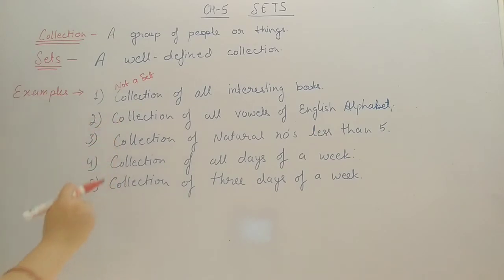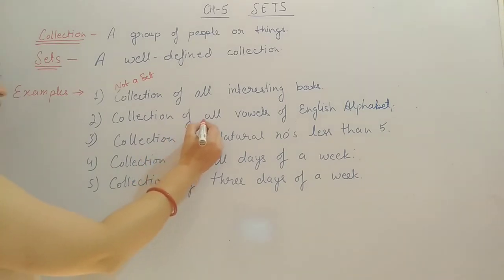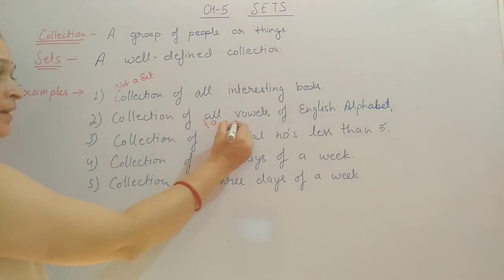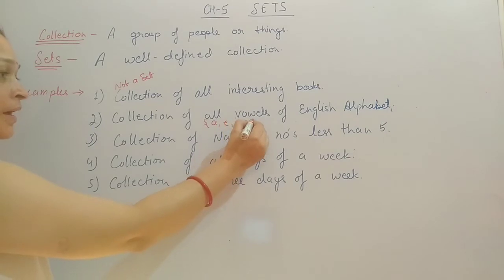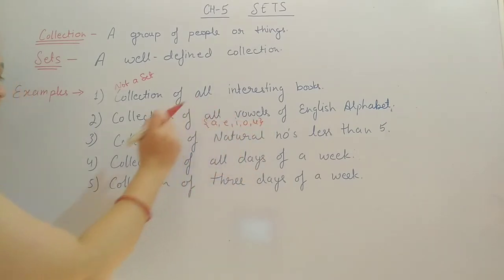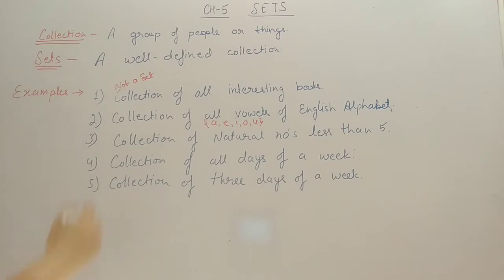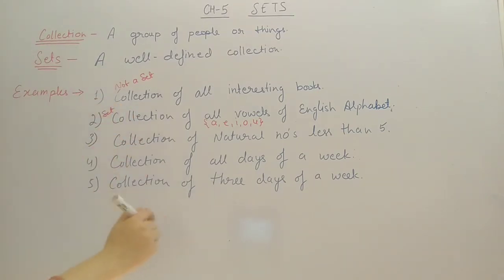The second example is the collection of all vowels of the English alphabet. We know what the vowels are: A, E, I, O, and U. So this second example is well-defined — all of us know that A, E, I, O, U are the vowels of the English alphabet. So this second example is a set, because it is well-defined.